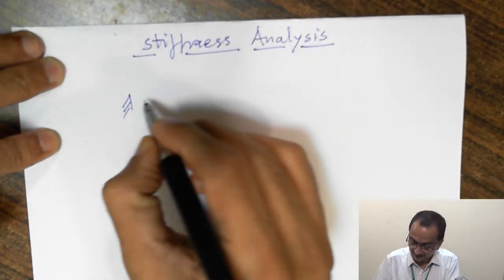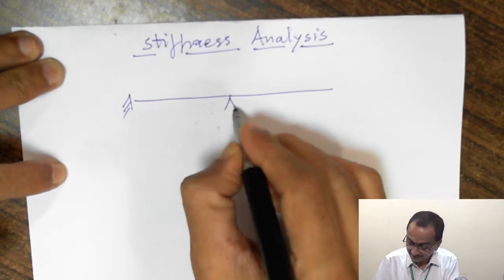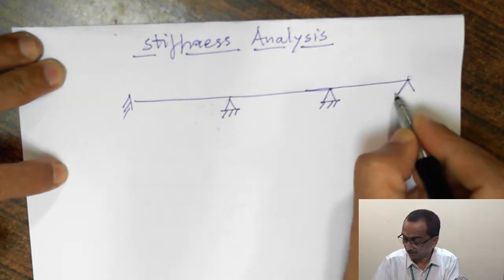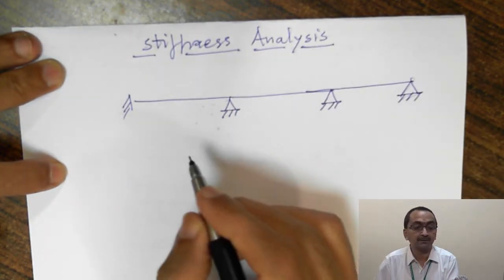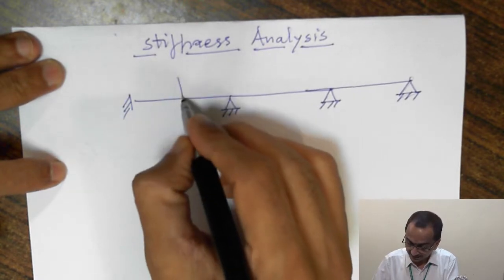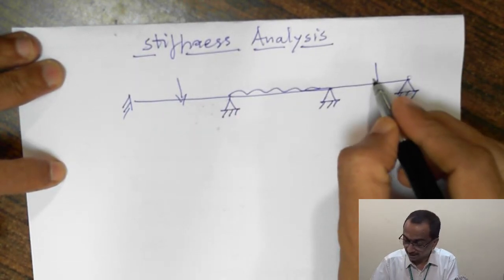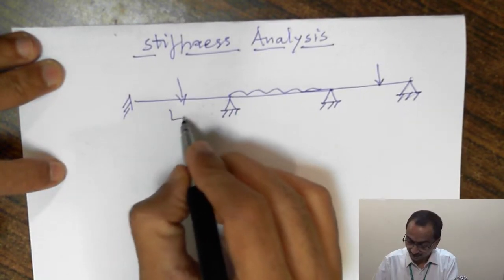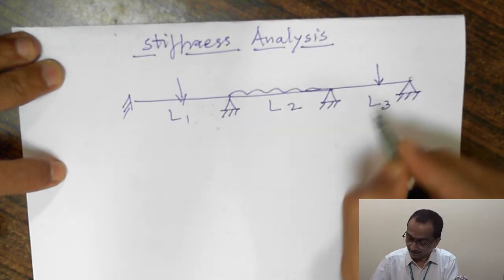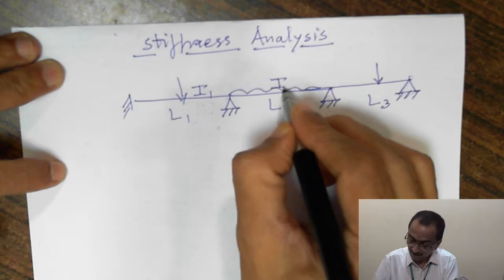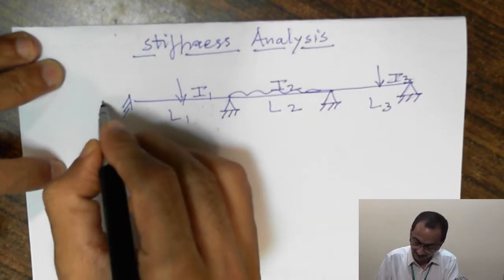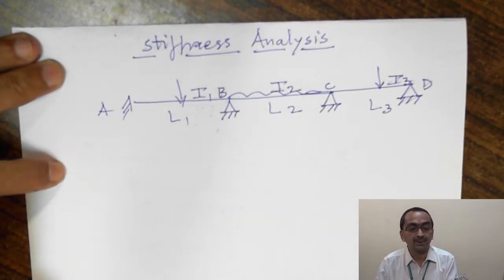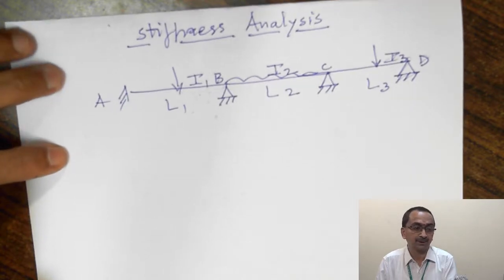Let us say there is any structure which is indeterminate in nature — a continuous beam. Let us take an example of a continuous beam which is indeterminate in nature and we want to analyze it. It is loaded with some loads and we know the loading values, the lengths L1, L2, L3, and the moment of inertia of these beams I1, I2, I3. Let us call the joints A, B, C, and D. We know everything and we want to analyze this using the stiffness method of analysis.